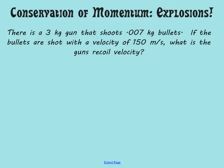It says there's a three kilogram gun that shoots .007 kilogram bullets. If the bullets are shot with a velocity of 150 meters per second, what is the gun's recoil velocity?